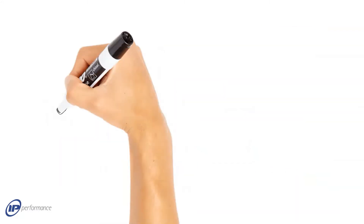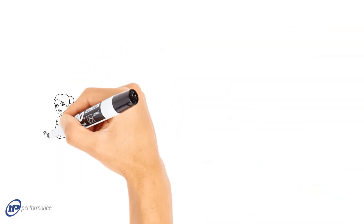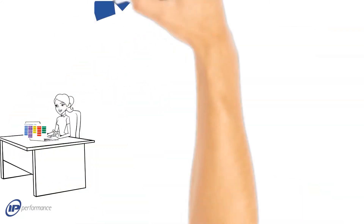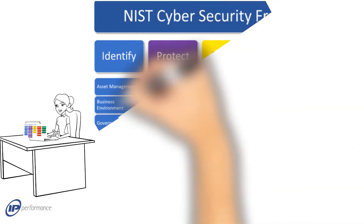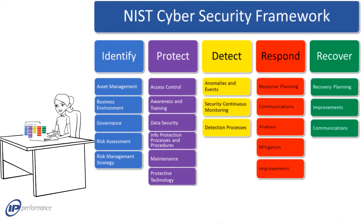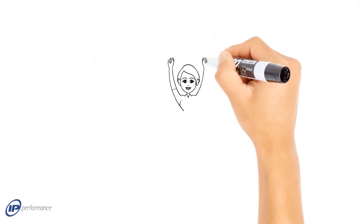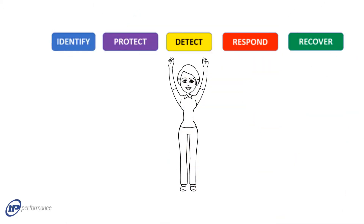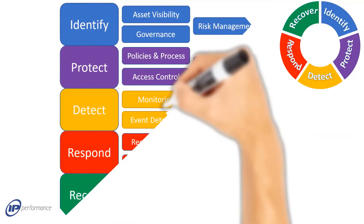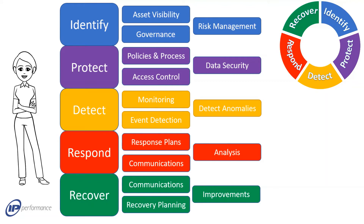The remit of your security function is constantly changing and expanding. Organizing your security operations into the NIST framework helps to introduce a workflow in order to assign activities to teams or individuals. The framework itself is made up of five functions: Identify, Protect, Detect, Respond, and Recover. The functions are further broken down into 23 categories, and underneath those categories are 108 subcategories.